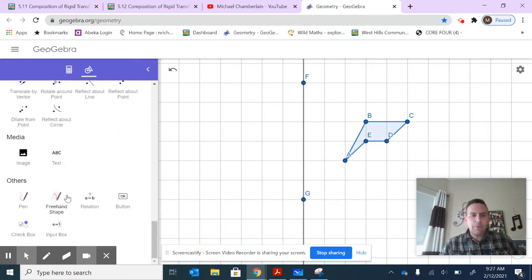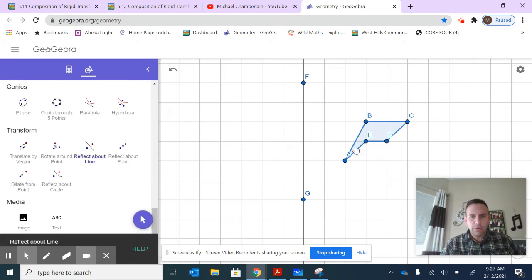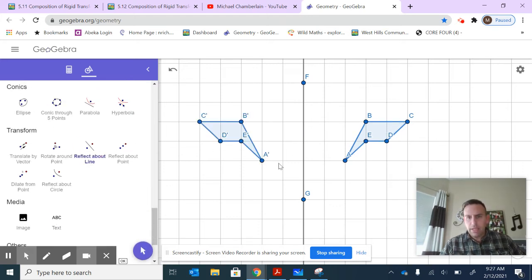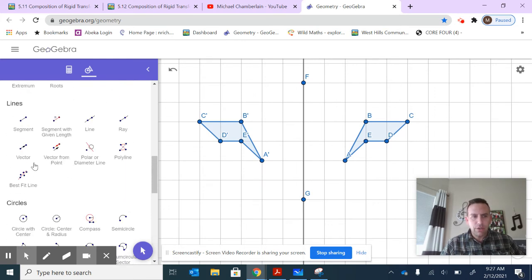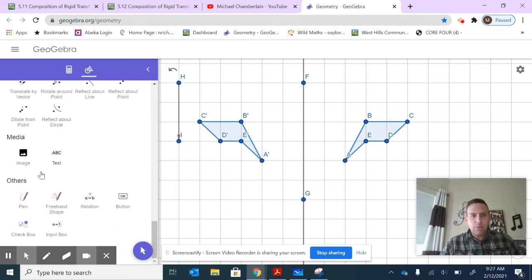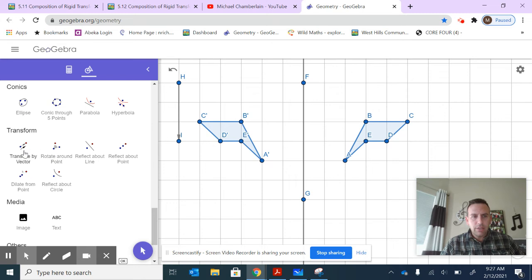What if I were to first reflect this image about this line and then translate it by a vector? Let me use the same example—moving down three spaces. Once I have that vector, I can translate by this vector and you can see it down there.